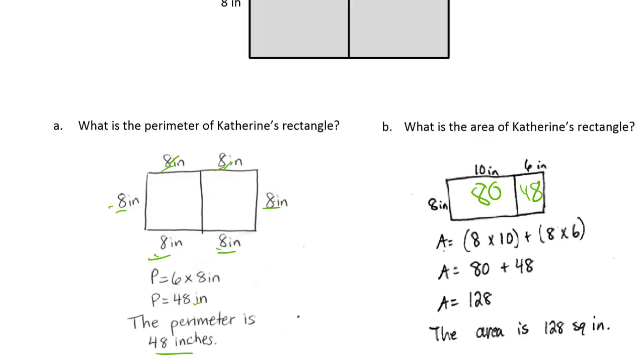What is the area of Catherine's rectangle? She broke this up. She sees the eight and she didn't have to figure out that it was 16 inches long, but she knows it's this rectangle plus that one. That's 8 by 10 and 8 by 6. Add it together, it's 128, and she's got everything written out there that shows how she did it.